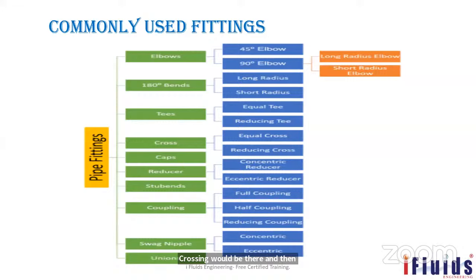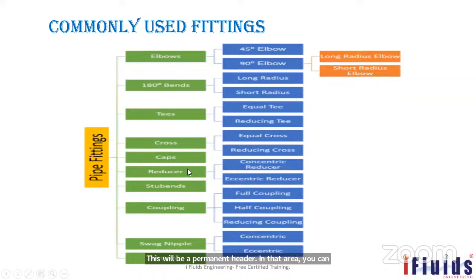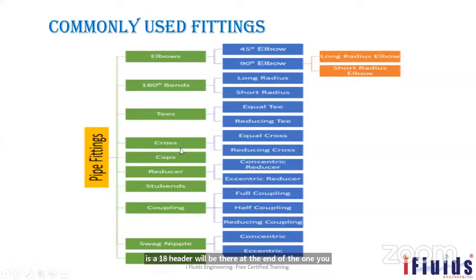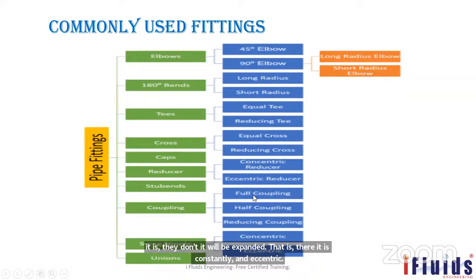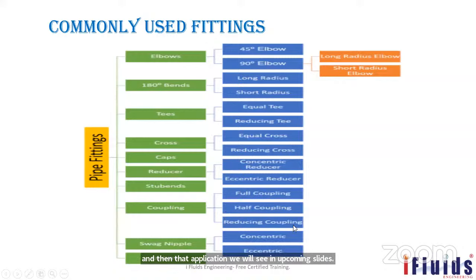Cap is an end fitting used to permanently close the end of a pipeline — unlike a blind flange, which is removable. Reducer reduces the pipeline size; if reversed, it acts as an expander. There are concentric and eccentric reducers based on application. Couplings include full coupling, half coupling, and reducing coupling.